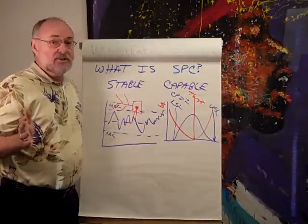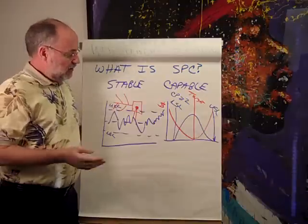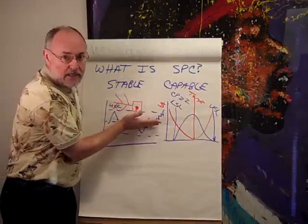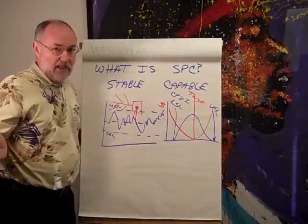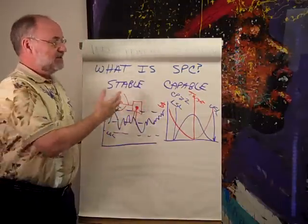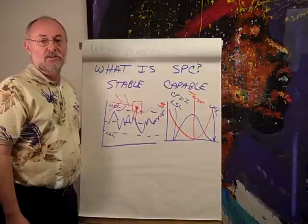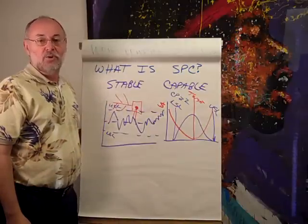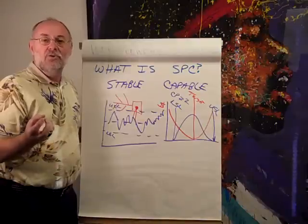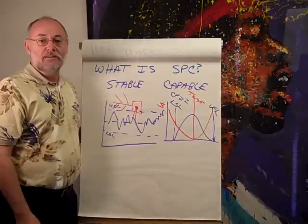Just keep doing that and make it better over time. Eventually we'd like to get to the point where there's no variation, but that's probably not going to happen. This is how we monitor it — with statistical process control. So learn how to use these tools. Be a money belt.